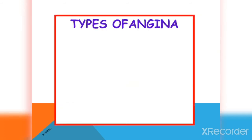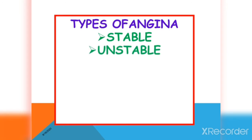Now let's discuss the types of angina. We have stable angina, also known as exercise-induced angina. We have unstable angina, which is angina at rest. Atherosclerotic occlusion of the coronary vessels is the most common cause of stable and unstable angina. Occlusion of the left anterior descending artery accounts for around 45% of cases. Occlusion of the right coronary artery accounts for around 30% of cases, and occlusion of the circumflex artery accounts for around 15% of cases.